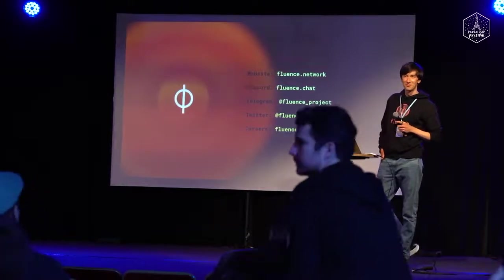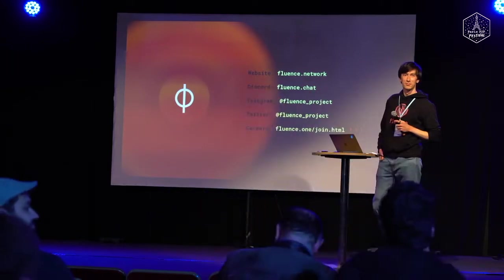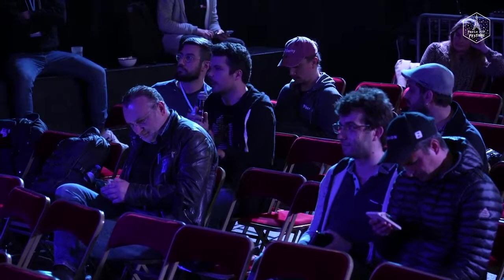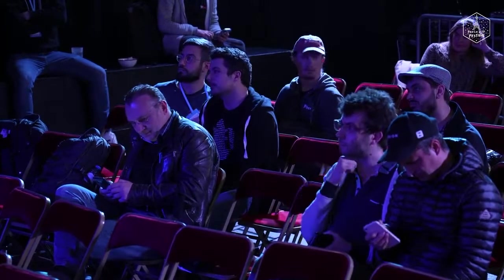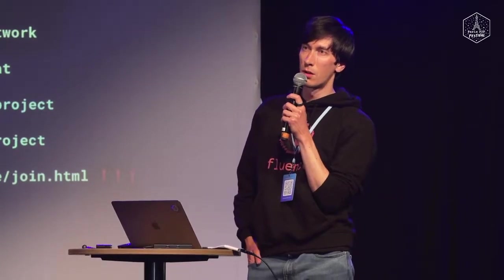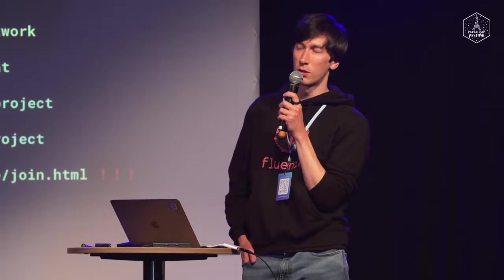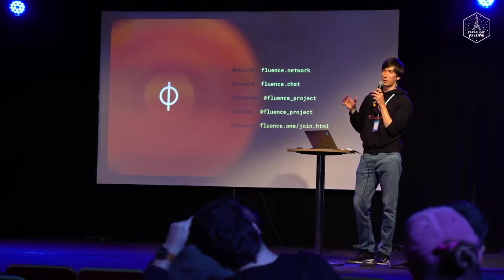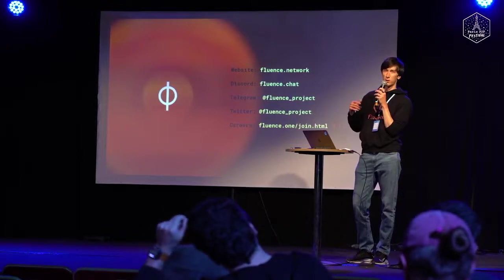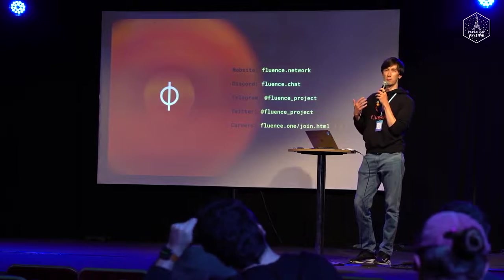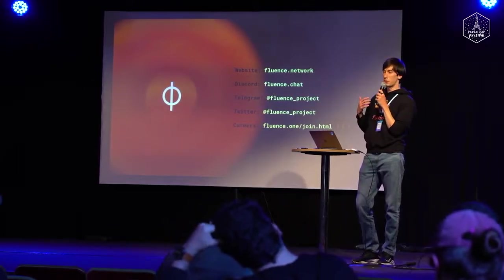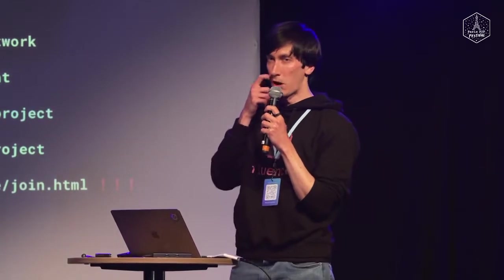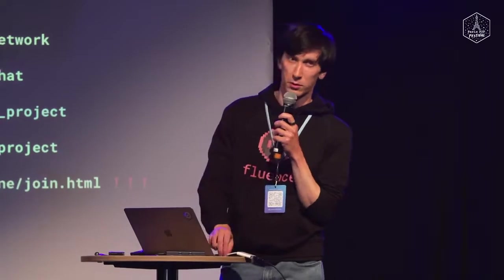Q: Do you have benchmark metrics about the performance of an application running on Aqua? A: We don't have fresh Aqua metrics. We did benchmarks on Marine — comparing it to native code running — and Marine with WebAssembly was about 30% slower. But that's not really bad; the advantages it gives you are much bigger than that 30% loss. For Aqua specifically, we'd love to do fresh benchmarks. In general, it's designed to be fast and should not be slower than HTTP.